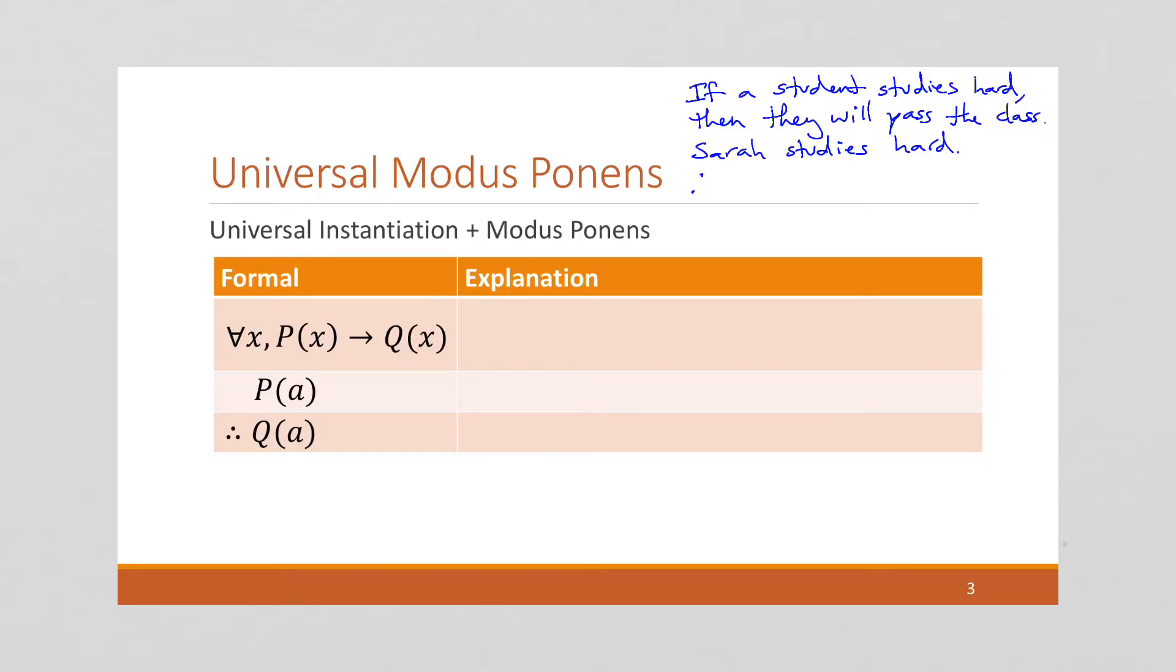Well, we can conclude that, therefore, Sarah will pass the class. This is called universal modus ponens. And it has the form for all X, which is implicit here. We're just saying students. So, we're talking about all students.